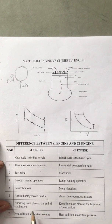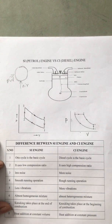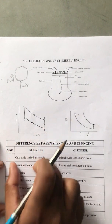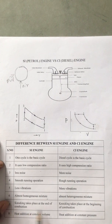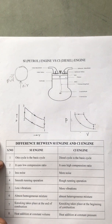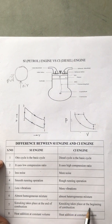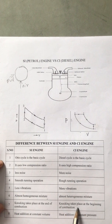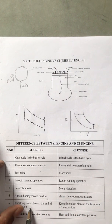Knocking takes place at the end of combustion in the petrol engine, whereas knocking takes place at the beginning of combustion in the diesel engine, because it is a compression ignition engine - almost all combustion takes place at the beginning instantaneously, which causes knocking. So knocking takes place before TDC in the CI engine, and knocking takes place after TDC in the SI engine.